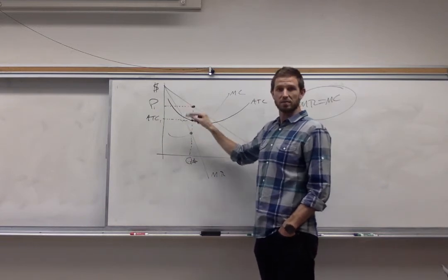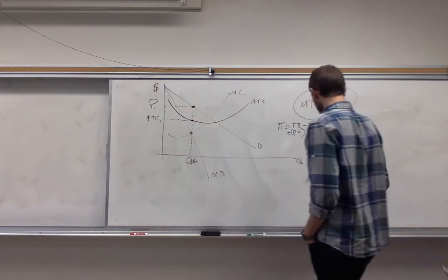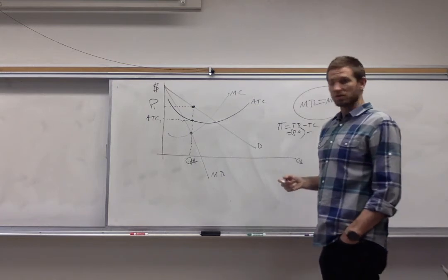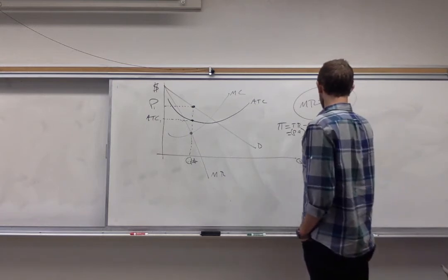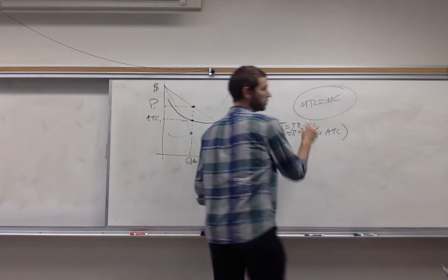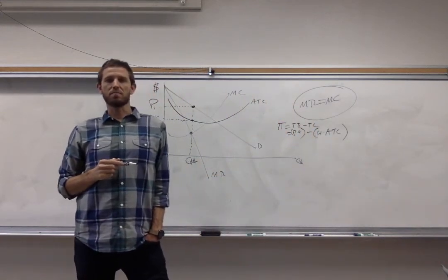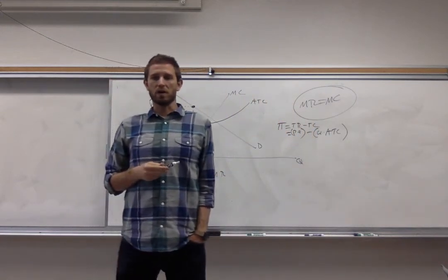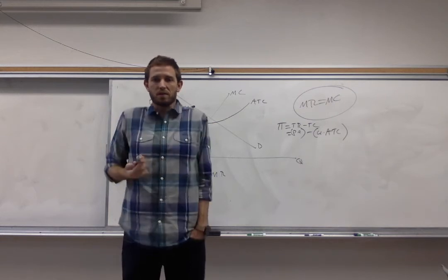So total revenue is this whole rectangle right here. We're going to shade that in. Total cost you can write that as quantity times average total cost. Multiplying the number of units that the firm sells by what it costs them to make each and every one. That'll give you the overall cost.